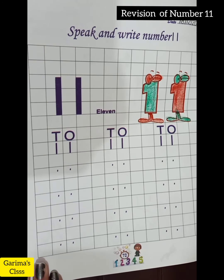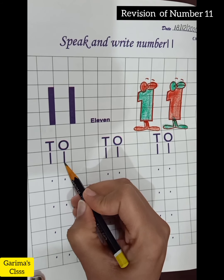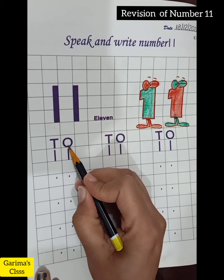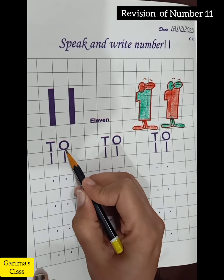Kids, look. What number is this? One, one, eleven. Kids, here is T and O. You have to keep your attention. T means tens. O means ones.